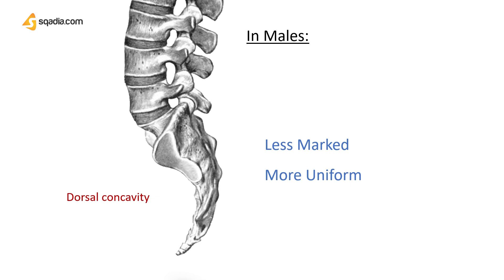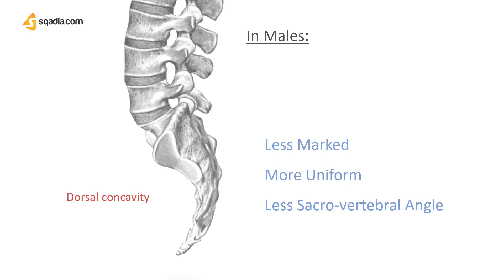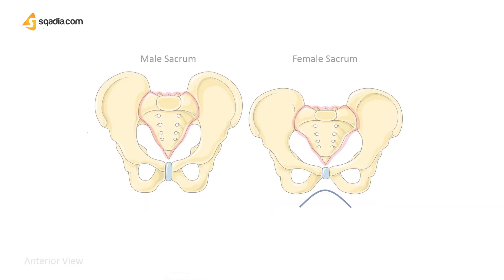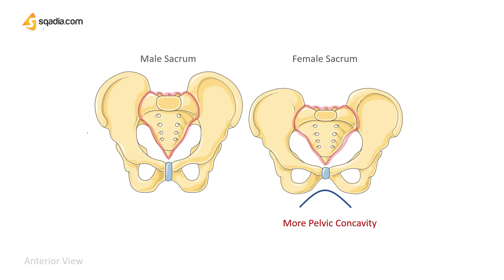Lastly, the sacro-vertebral angle is more marked in females, and the downward direction of the pelvic surface is greater than in males. The size of the pelvic cavity is also greater in females.